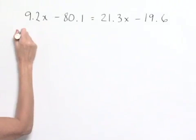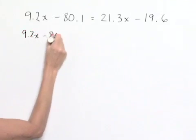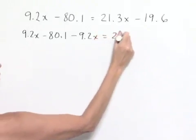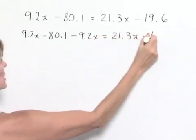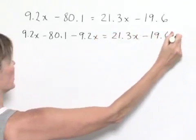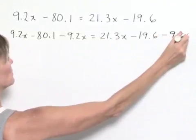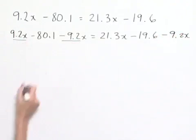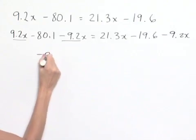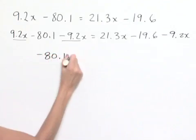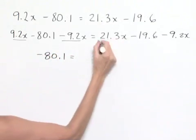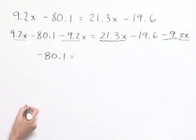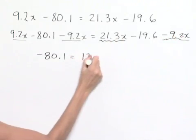So we have 9.2x minus 80.1 minus 9.2x equals 21.3x minus 19.6 minus 9.2x. On the left hand side, these two terms subtract out to give us zero, leaving us with negative 80.1. That equals, combining 21.3x minus 9.2x, which gives us a result of 12.1x.